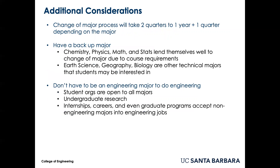A few additional considerations: the change of major process will take two quarters to one year plus one quarter, depending on the major and the courses the student has taken prior to attending UCSB. Students must have a backup major in mind. Chemistry, Physics, Math, and Statistics lend themselves well to a change of major due to course requirements overlapping with required courses in the College of Engineering.